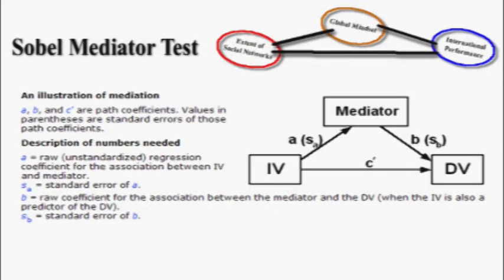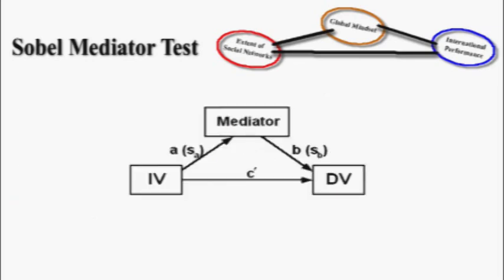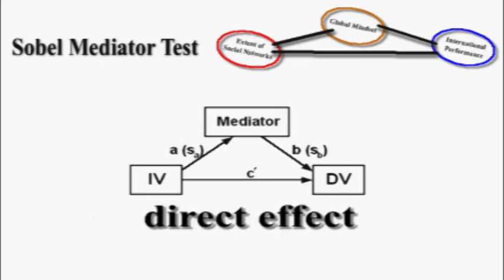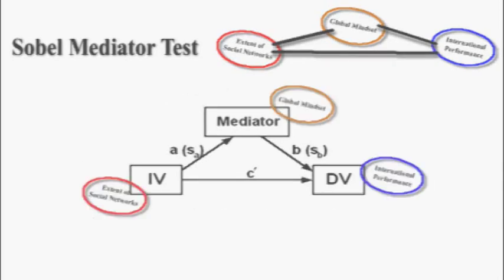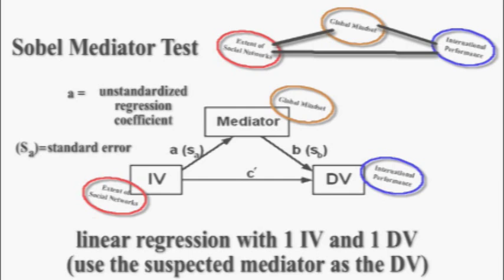Here's how the Sobel test works. We have an IV, a suspected mediator, and a DV. The bottom of the triangle represents the direct effect from IV to DV, which could be insignificant by itself. But sending the IV through a mediator variable to the DV could show serious significance — that's the definition of a mediator, otherwise known as the indirect effect. We'll label the IV as extent of social network, the suspected mediator as global mindset, and the DV as international performance. The next step is to run a new multiple regression with the IV (social network extent) where the DV is the suspected mediator.